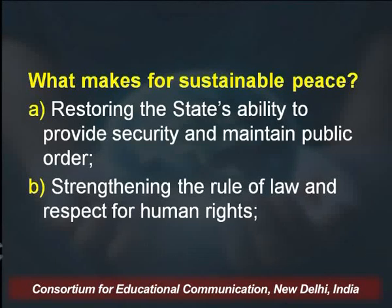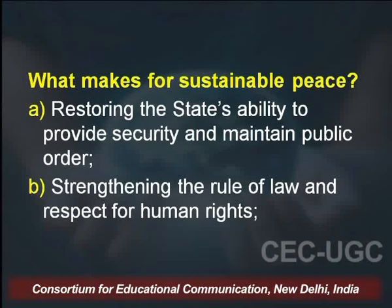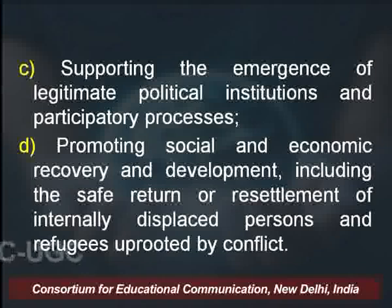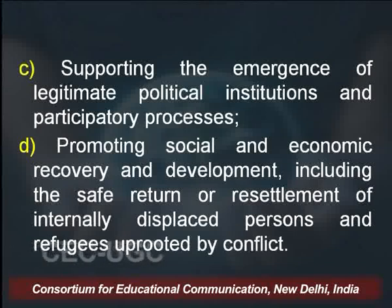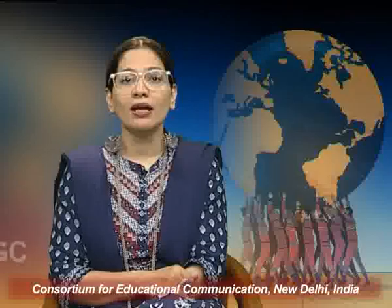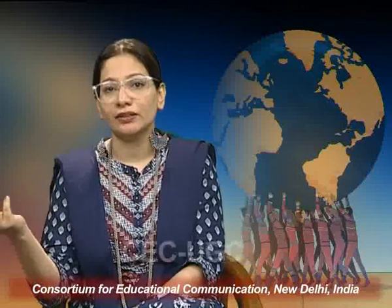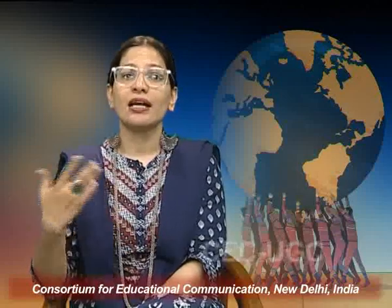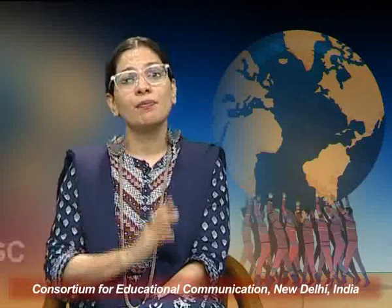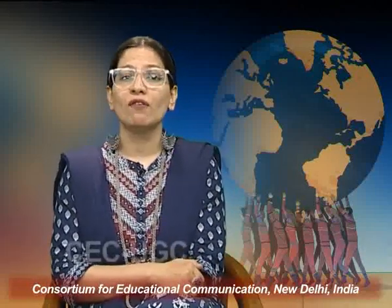What makes for sustainable peace? Key conditions include restoring the state's ability to provide security and maintain public order, strengthening the rule of law and respect for human rights, supporting the emergence of legitimate political institutions and participatory processes, and providing social and economic recovery and development including the safe return or resettlement of internally displaced persons or refugees uprooted by conflict. Critical peace building activities include disarmament, demobilization, reintegration, mine action, security sector reform and other rule of law related activities, electoral assistance, protection and promotion of human rights, and support to the restoration and extension of state authority.